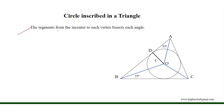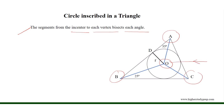The segment from the in-center to each vertex bisects each angle of the circumscribed triangle. For example, for triangle ABC, the in-center is O, and the three segments with respect to the three vertices A, B, and C are OA, OB, OC, which bisect angles A, B, and C. Therefore, we can write that as BAO equals 35 degrees, therefore CAO equals 35 degrees as well.